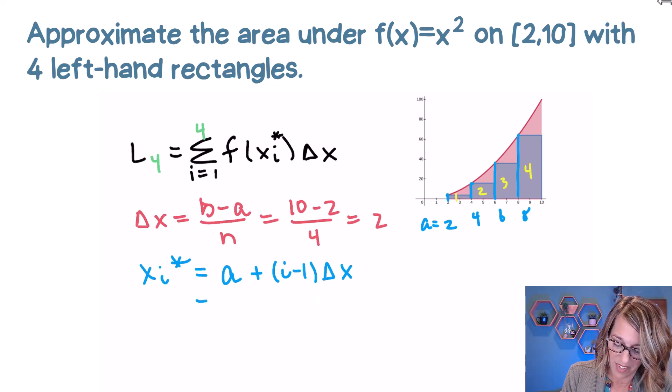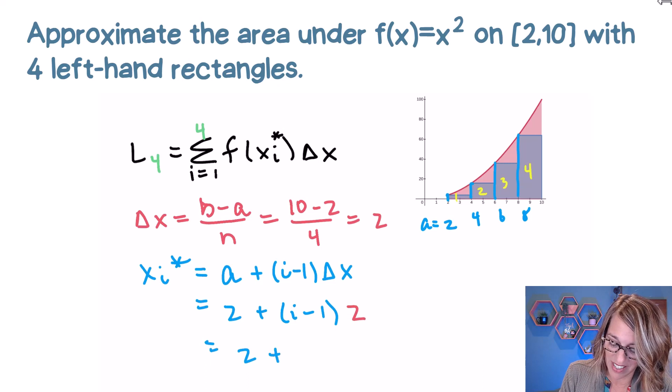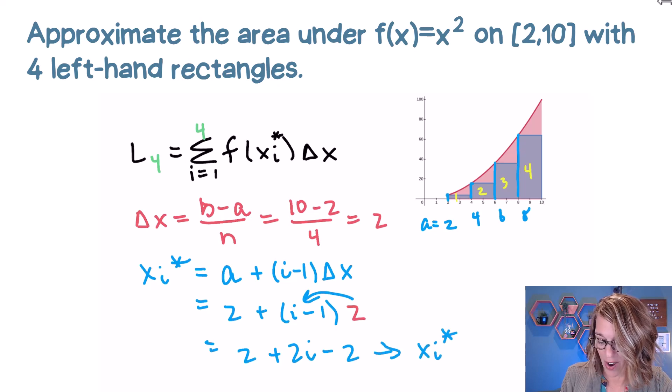So for our example, a is equal to two, plus i minus one, delta x is also equal to two, I can do the math here and simplify, I get two plus distributing that two, two i minus two. And that gives me x sub i star represented by just, oh my gosh, that's so nice, just by a two i.